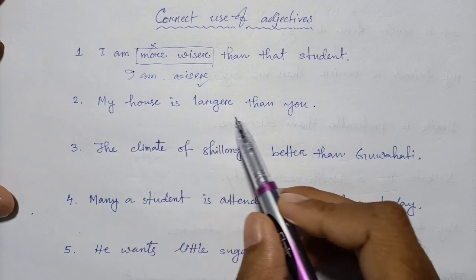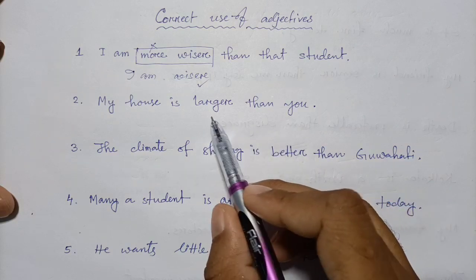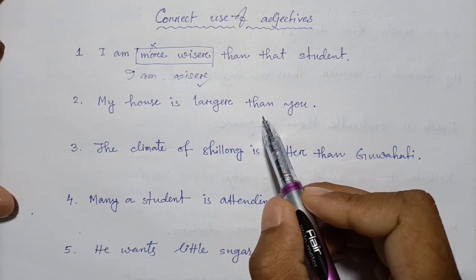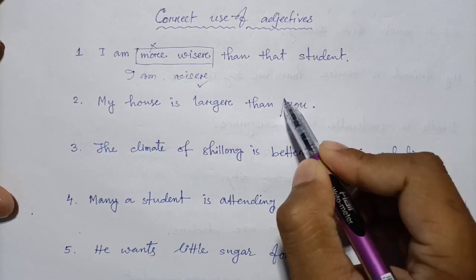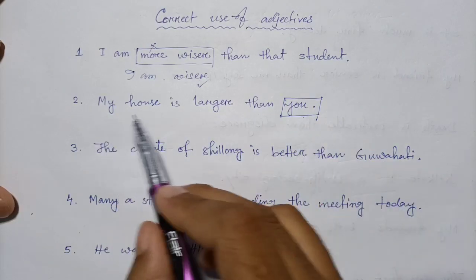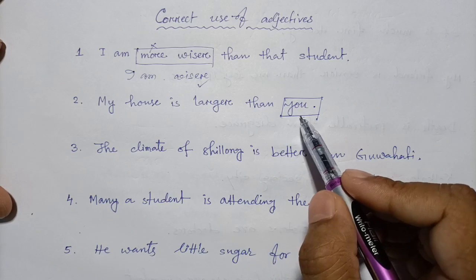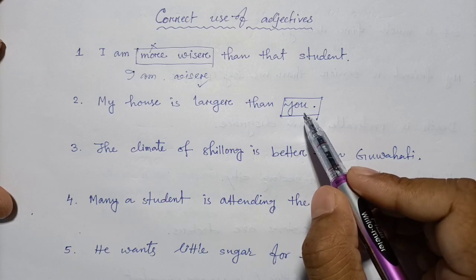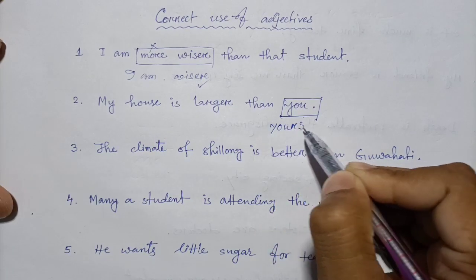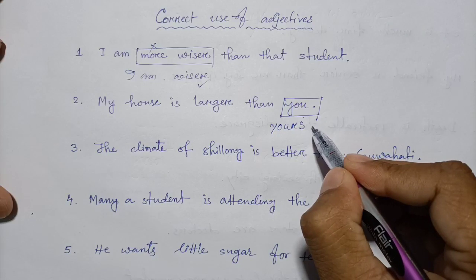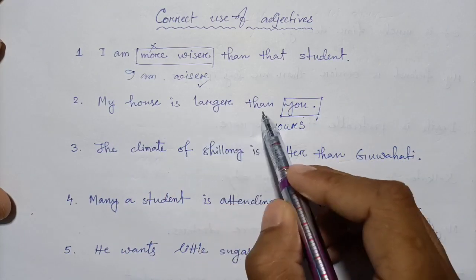Next question: 'My house is larger than you.' This is wrong. When comparing houses, you need to use a possessive pronoun. 'You' should be replaced with 'yours,' meaning 'your house.' So the correct sentence is: 'My house is larger than yours.'